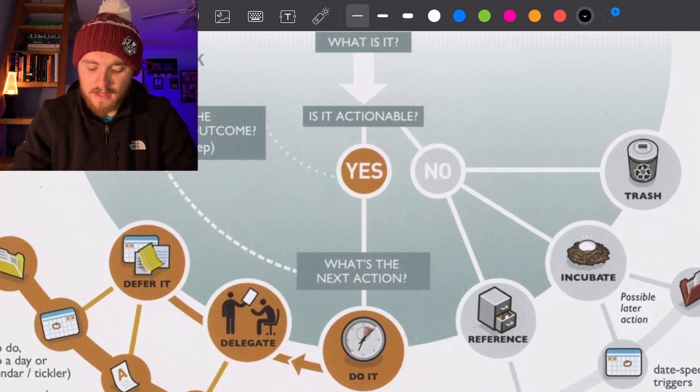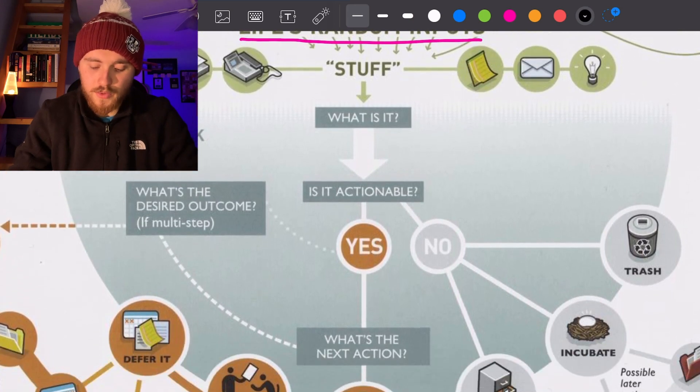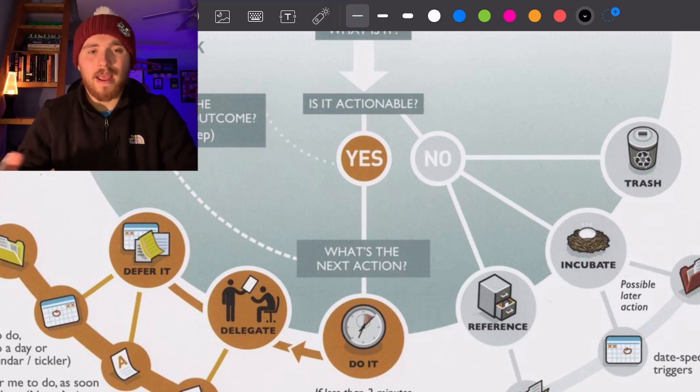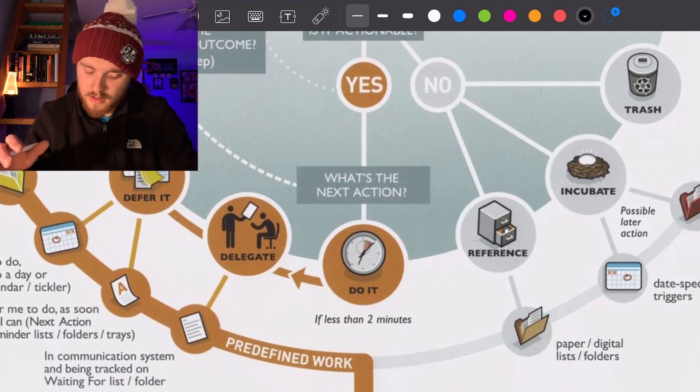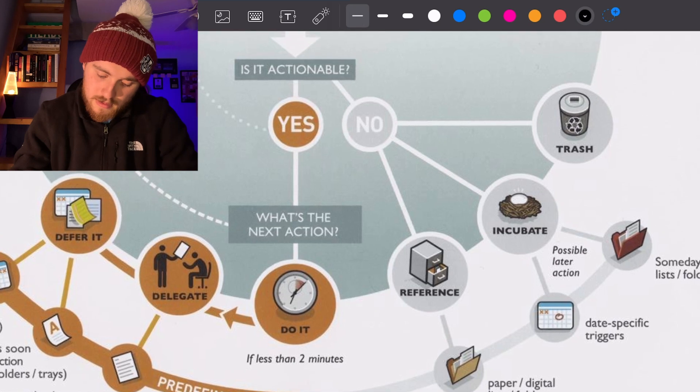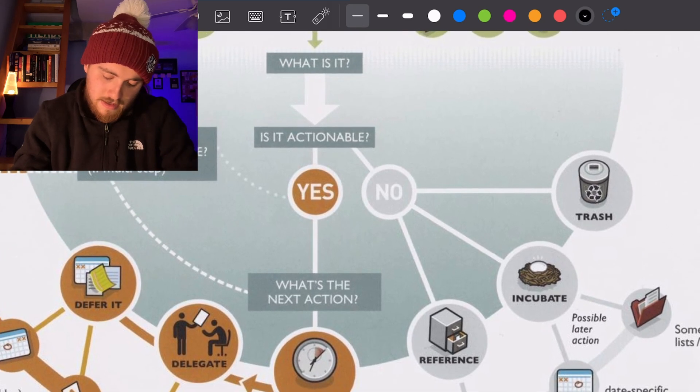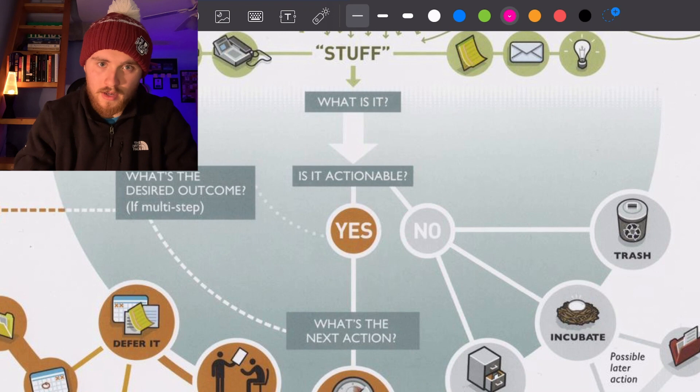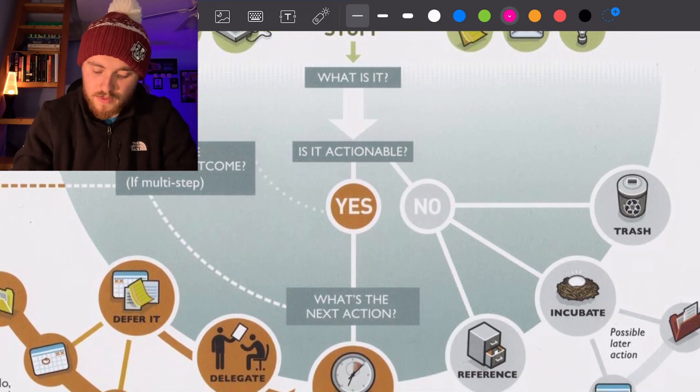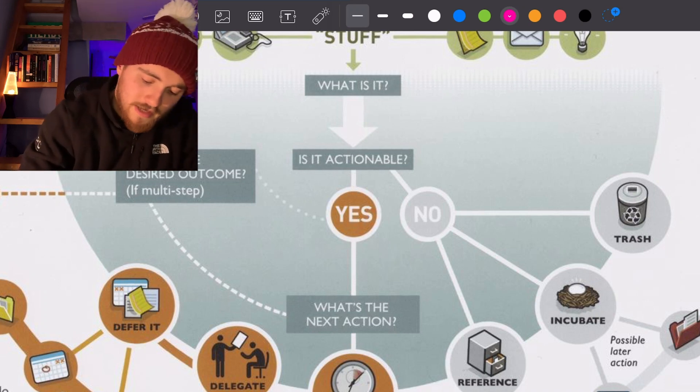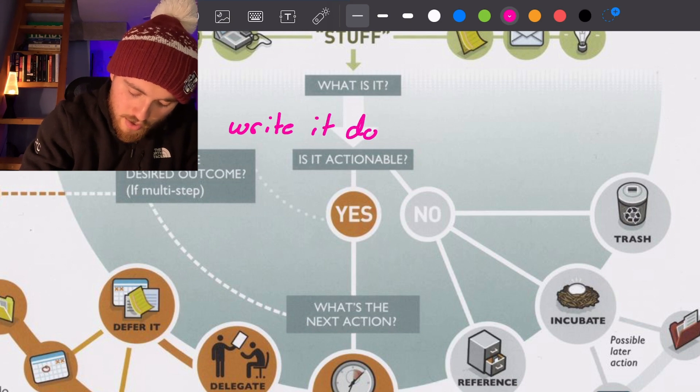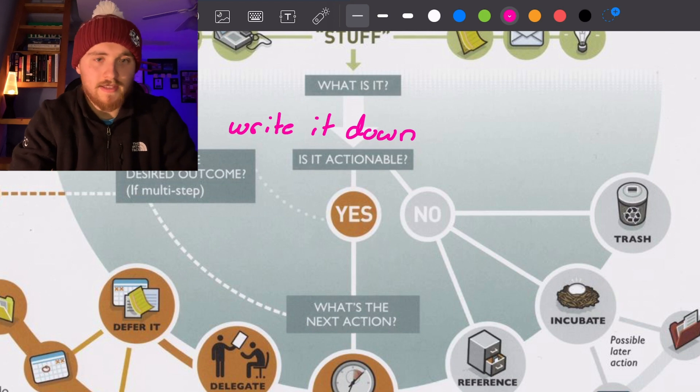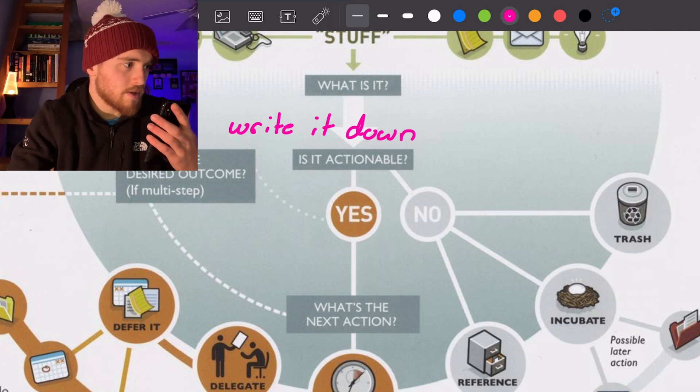First off, I think this whole if you get input and it's not actionable, I mean I get that you might need to store it, but for the most part, I feel like this system is a little backwards. When you get the input, whatever it is that you think you have to do, instead of sorting it or doing all this ahead of time, the first step should be write it down. For that, what I personally use is I go 'Hey Siri, add reminder to make dinner tonight.'